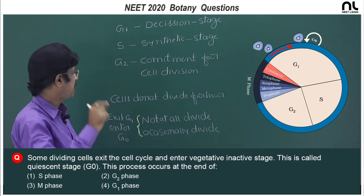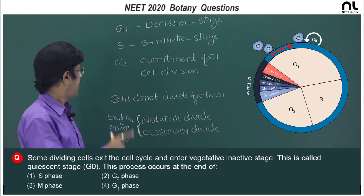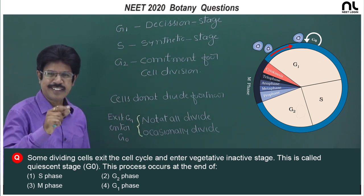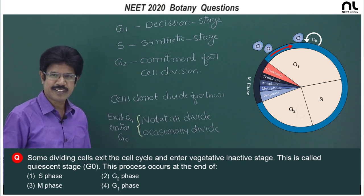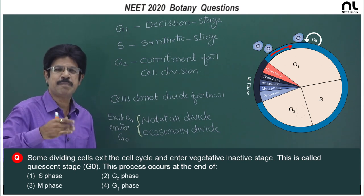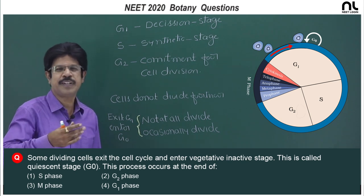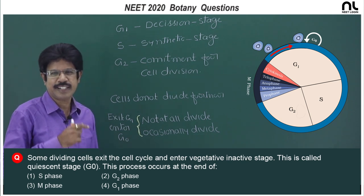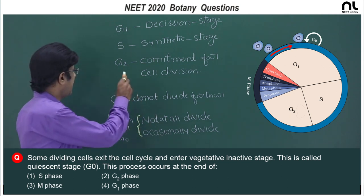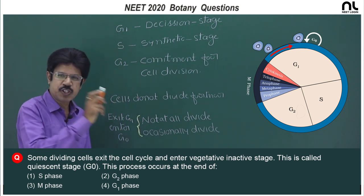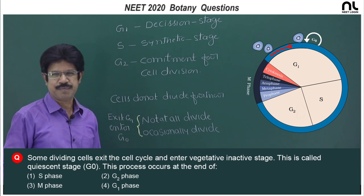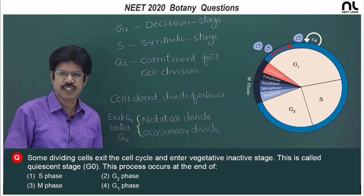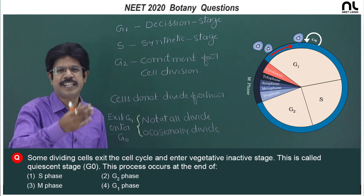G1 is the decision stage. S is the synthetic stage where DNA replication occurs — doubling of DNA occurs in S phase. In the case of G2, it is commitment for cell division, meaning the cell is ready to enter the next stage, which is M.